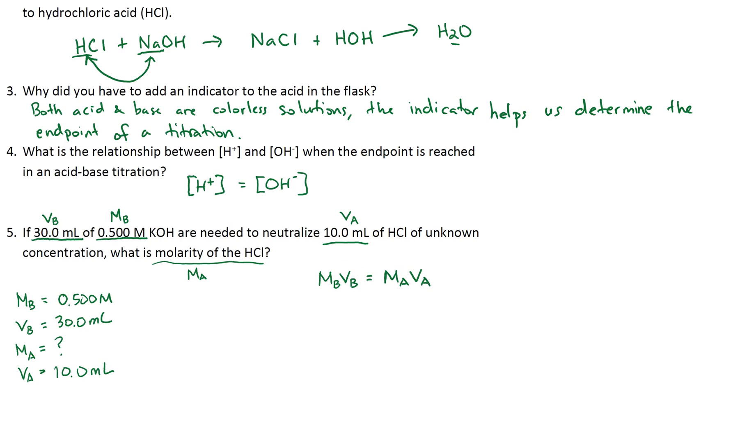I want to find MA. This is what I'm looking for. So how can I get that by itself? I divide both sides by VA so that this VA paired up with the MA cancels out and MA is all by itself.